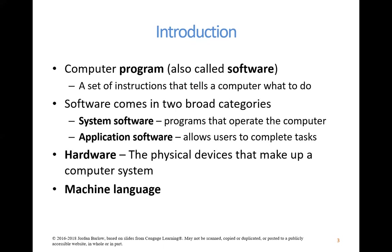System software is the software that actually makes a computer run — for example, Microsoft Windows is system software. Application software is what actually allows users to do different things. We're going to be starting small in this class and just programming some application software.